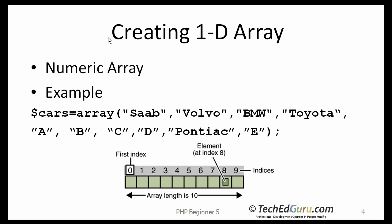Here we are creating a numeric array — remember, numeric refers to the index value, not the content of the array. We are initializing it with 10 elements: saab, volvo, etc. Each item in an array is called an element, and each element is accessed by its numeric index. As shown in the illustration, numbering begins with 0 by default. The ninth element, for example, would therefore be accessed by an index of 8.